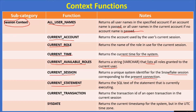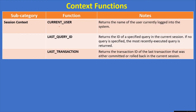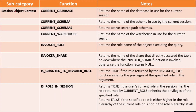current_statement returns the SQL text of the statement that is currently executing. current_transaction returns the transaction ID for an open transaction in the current session; if you don't have any open transaction, it returns null. current_user returns the name of the user currently logged into the system. last_query_id returns the ID of the specified query in the current session; if no query is specified, the most recently executed query is returned — you can pass the query index of last one or last two. last_transaction returns the transaction ID for the last transaction that was either committed or rolled back in the current session.